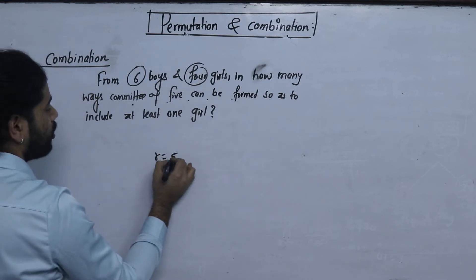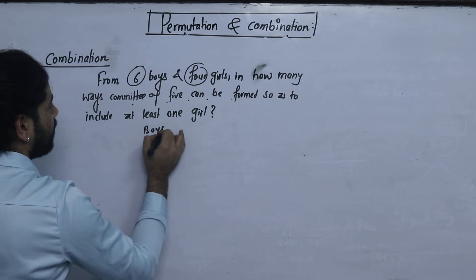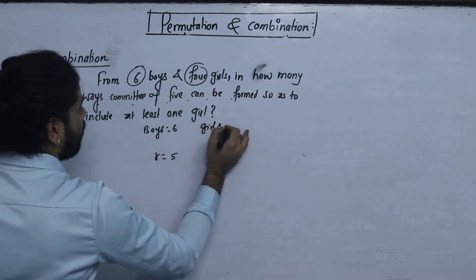So, total are 5. So, these 5 are boys. 6 girls, 4.